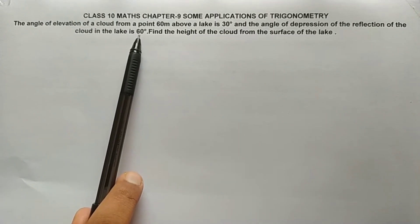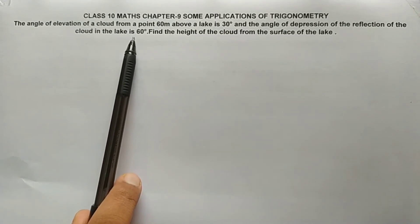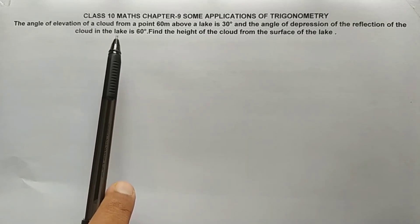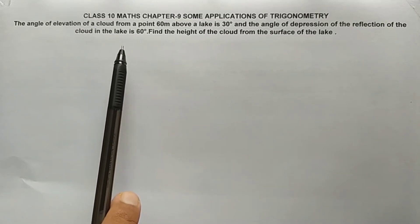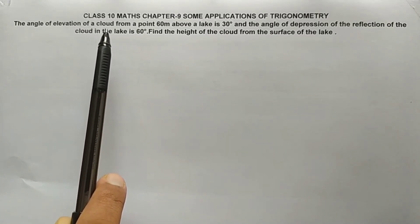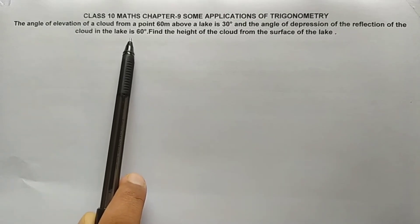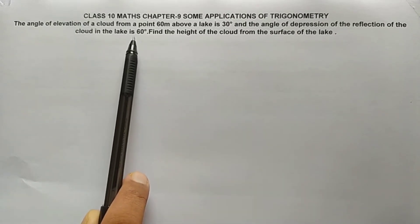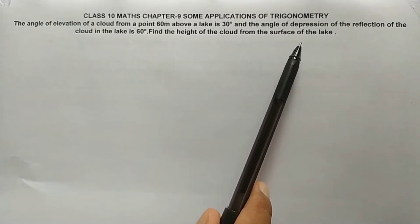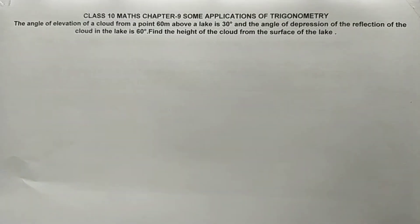The cloud is above the lake and its reflection is in the lake. The angle of depression of the reflection of the cloud in the lake is 60 degrees. We have to find the height of the cloud from the surface of the lake. Let's draw the figure first.